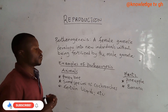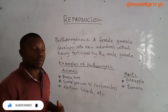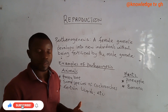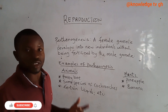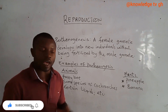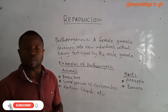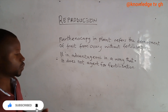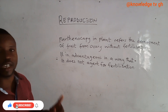Another type of asexual reproduction is parthenogenesis. In parthenogenesis, a female gamete develops into a new individual without being fertilized by the male gamete. This occurs in both plants and animals. In animals, parthenogenesis occurs in bees, some species of cockroaches, and certain lizards. In plants, pineapple and banana undergo parthenogenesis — both do not involve the male gamete for fertilization. Parthenocarpy refers to the development of fruit from an ovary without fertilization.